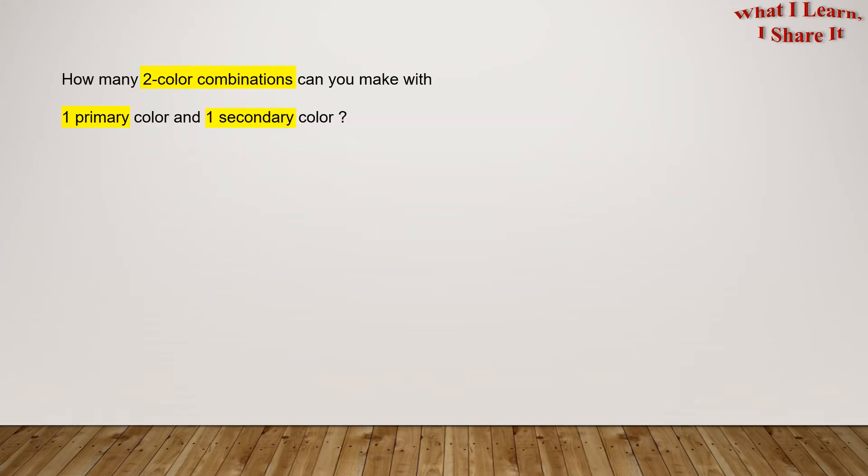How many two-color combinations can you make with one primary color and one secondary color? So we know primary colors are red, yellow, and blue. And the secondary colors are green, purple, and orange.